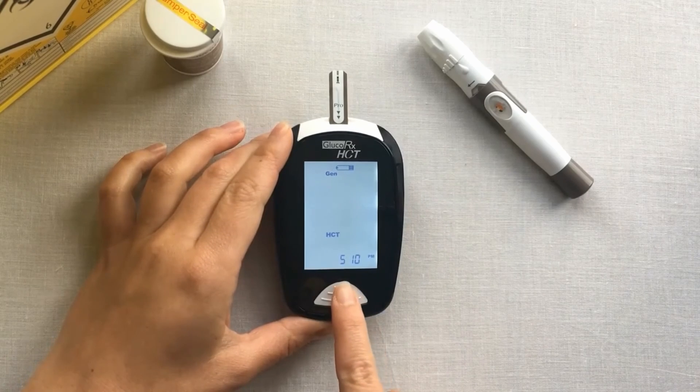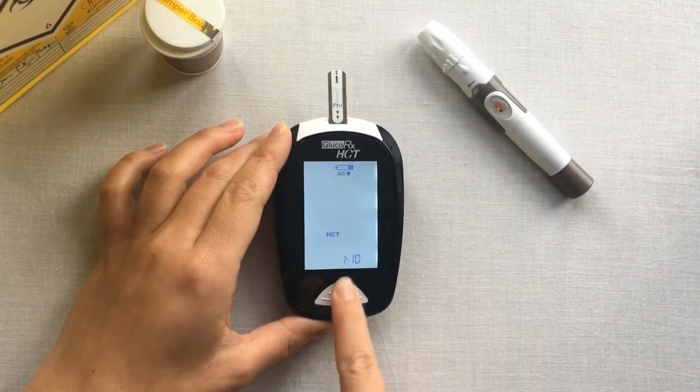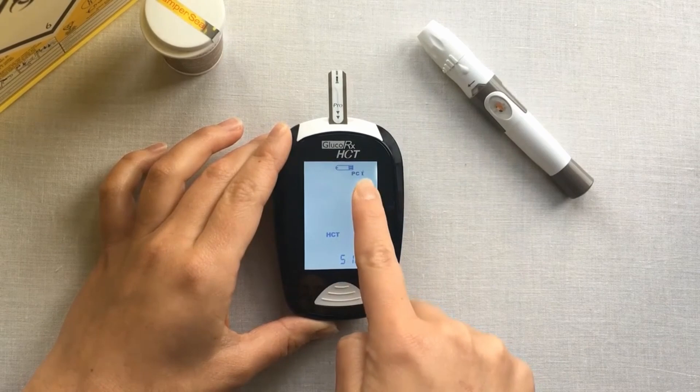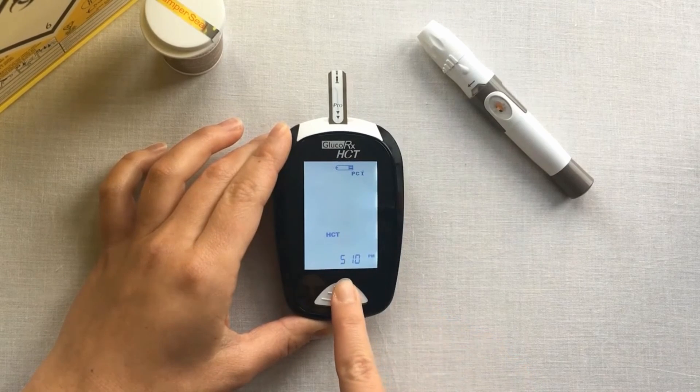Select your meal markers by pressing the middle button. General mode, AC before a meal full apple, PC after a meal eaten apple.